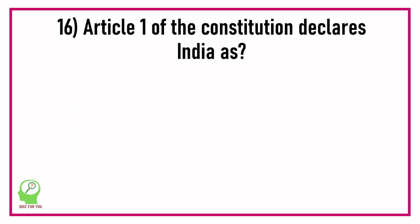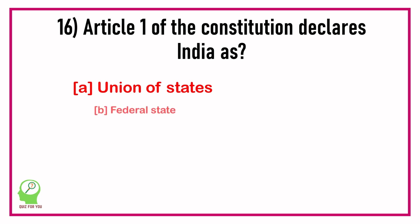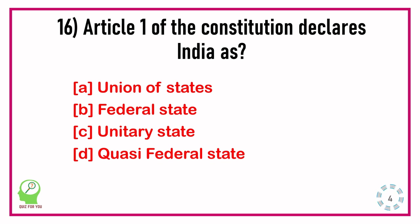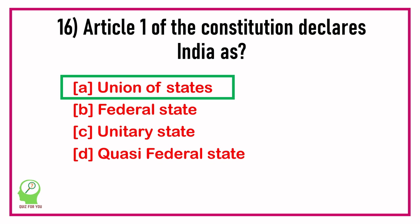Question number sixteen: Article 1 of the constitution declares India as which of the following? Options are: Union of States, Federal State, Unitary State, Quasi-Federal State. Answer: Union of States.